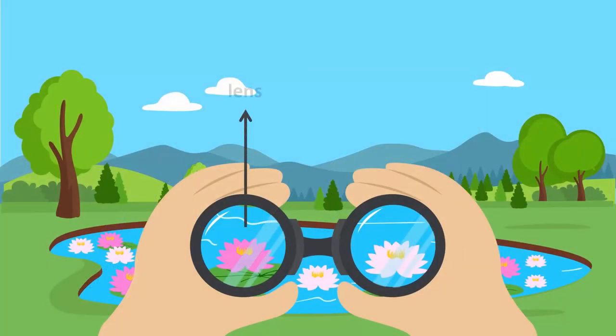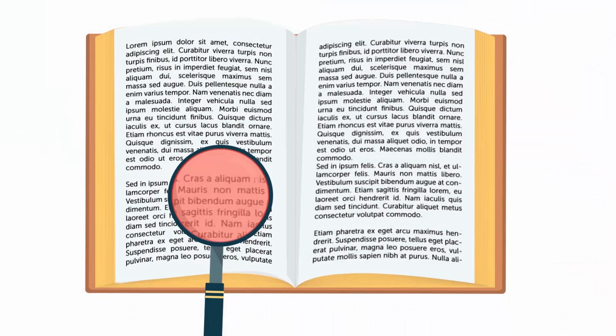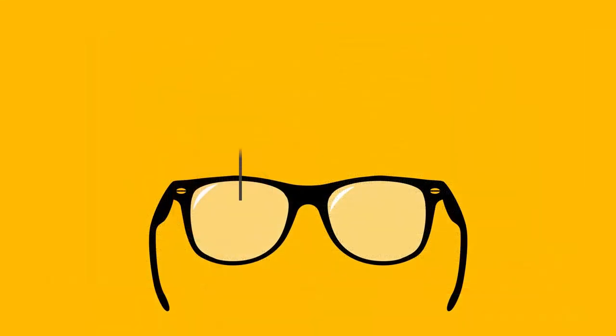There are two lenses in binoculars that make objects appear near. The magnifying glass which is used to see tiny things also has a lens in it. The lenses in spectacles help us see clearly if we have bad eyesight.